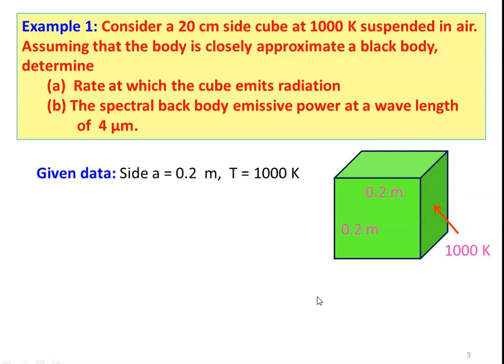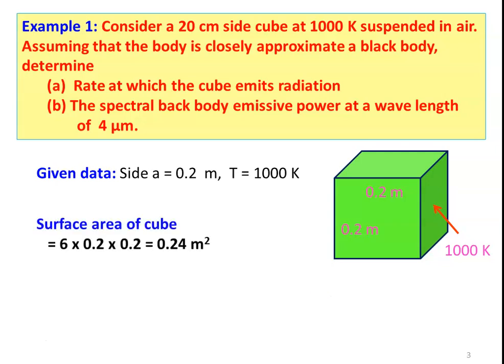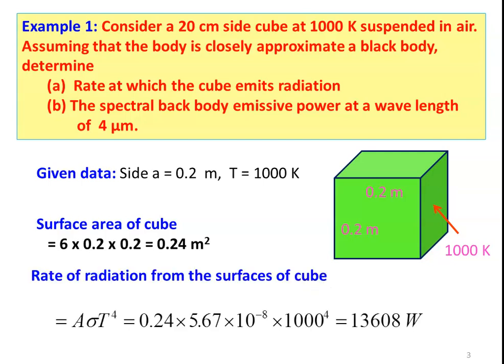The given data: side is 0.2 meter and surface temperature is 1000 Kelvin. First we calculate the surface area of the cube. There are 6 sides: 6 × 0.2 × 0.2 = 0.24 meter square. The rate of radiation from the surfaces of the cube is given by the Stefan-Boltzmann law: Q = A × σ × T⁴. Substituting A = 0.24, σ = 5.67 × 10⁻⁸, and T = 1000 Kelvin.